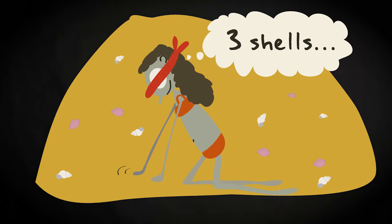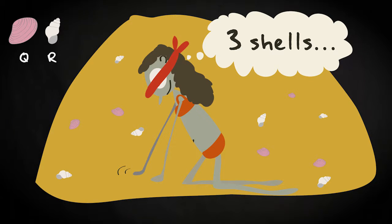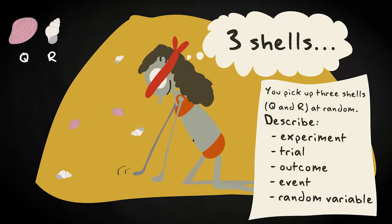Imagine this situation where you pick up three shells at random at a beach with only two types of shell around, which I'll call Q and R. Can you describe this activity with the terms experiment, trial, outcome, random variable and event? Try to explain to which part of the shell collecting activity each term applies.